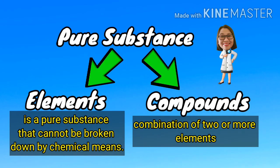On the other hand, pure substance is classified into elements and compounds. Element is a pure substance that cannot be broken down by chemical means, and compound is a combination of two or more elements.